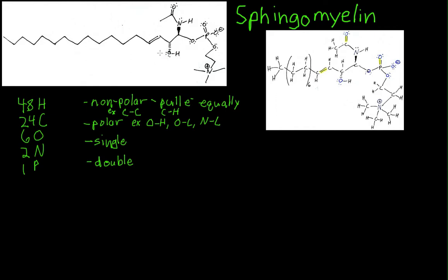We write delta negative next to that oxygen. Next to this hydrogen, we write delta positive, and next to this carbon we write delta positive. These represent partial charges — not a full charge like we see on the phosphate group or the amine group, just a partial charge. For single bonds, we represent these by one line between the two atoms, for example carbon-carbon or phosphorus-oxygen. Anywhere we see a single line, including wedges or dashed lines, that is a single bond.